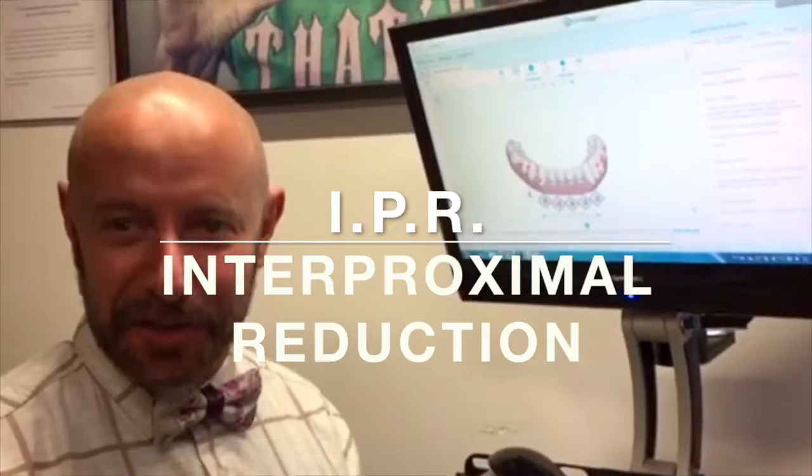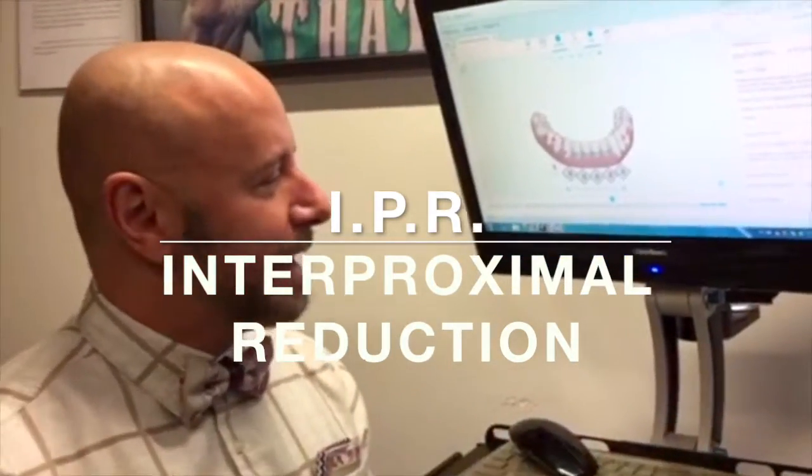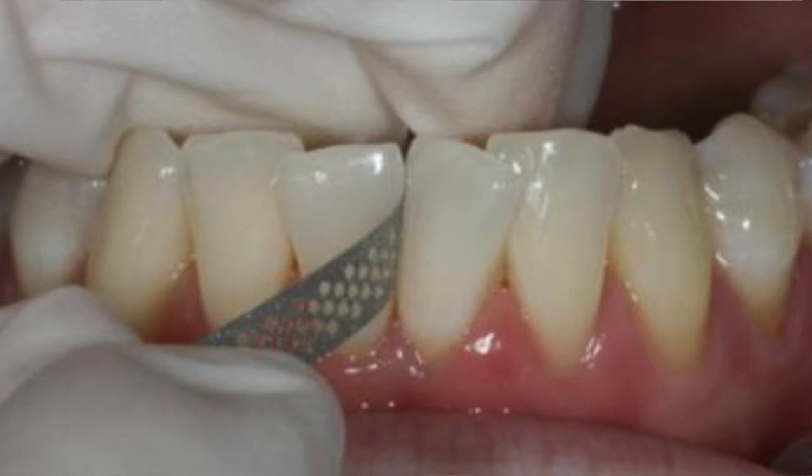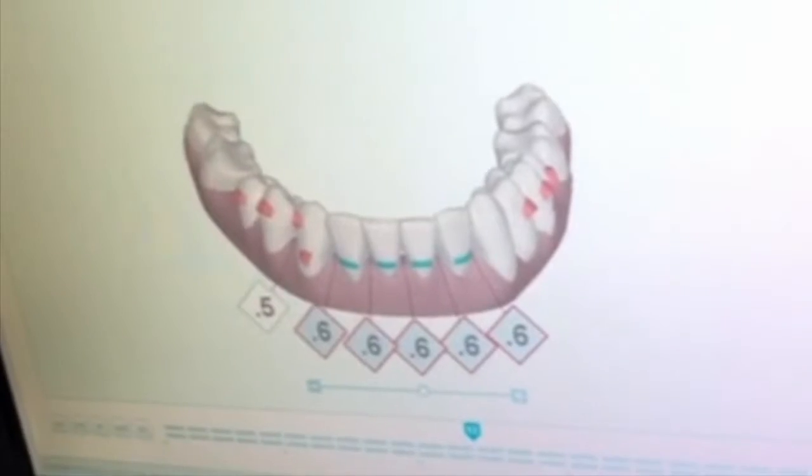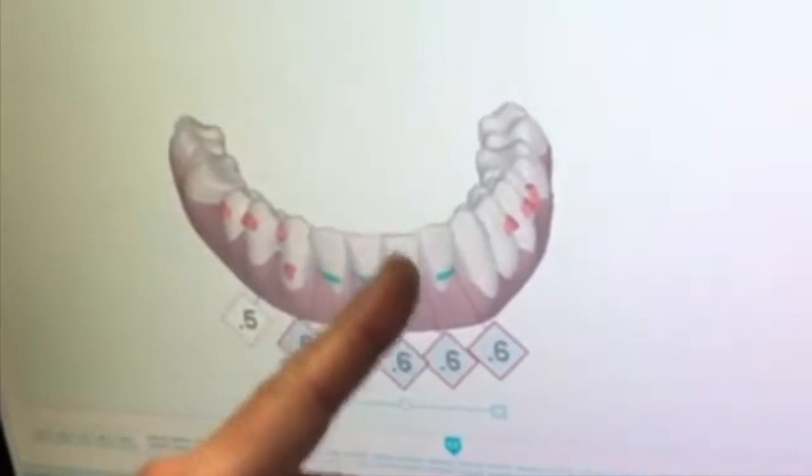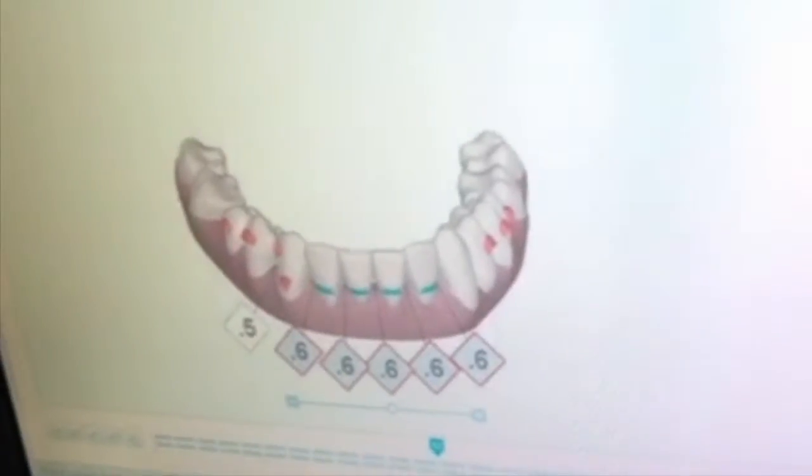It is interproximal reduction, IPR. And it's a technique for us to create space where we need to have space to move the teeth. As adults, our jaws are no longer growing and creating space for us. So we need to make space between the teeth in order to move them into the position that we'd like to move them into.